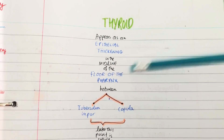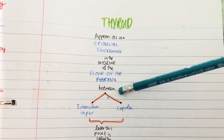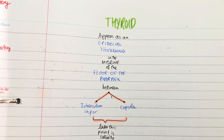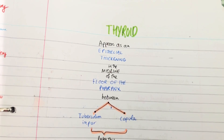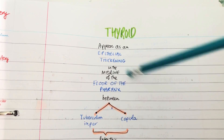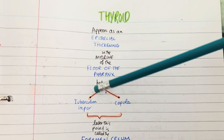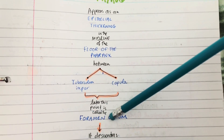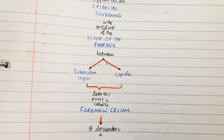Remember where the thyroid is — it's basically in the neck. So where does it appear? It appears in the floor of the pharynx, in the middle of the floor of the pharynx, where the middle part starts dividing and proliferating. The thyroid appears as an epithelial thickening in the midline of the floor of the pharynx, specifically between the tuberculum impar and the copula, and later in development this point is called the foramen cecum.